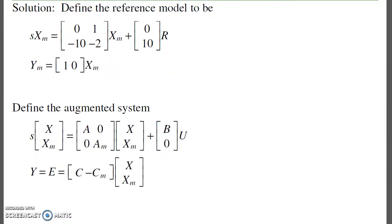So the first step is to define your reference model. Give me any reference model that satisfies that transfer function. Here I'm using controller canonical form. Any form works. I'll now define the augmented system with the plant and the reference model. The output is the difference in the two.